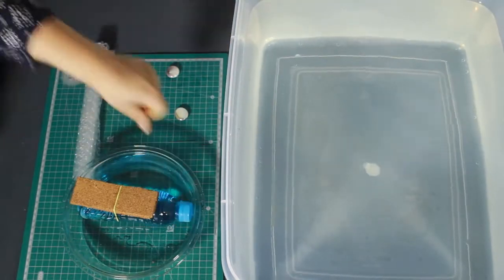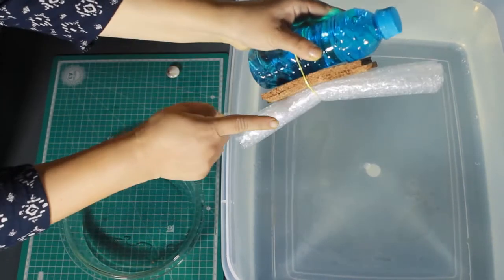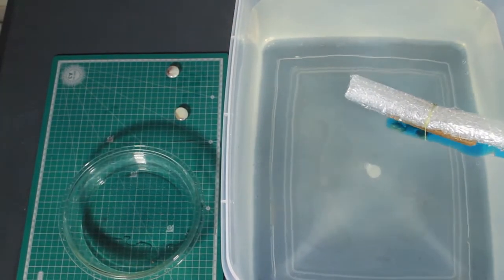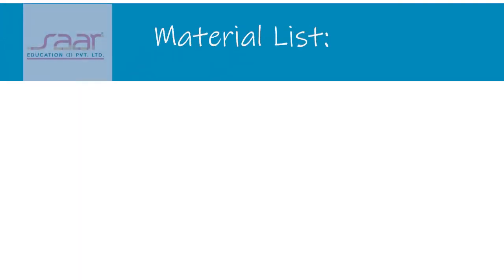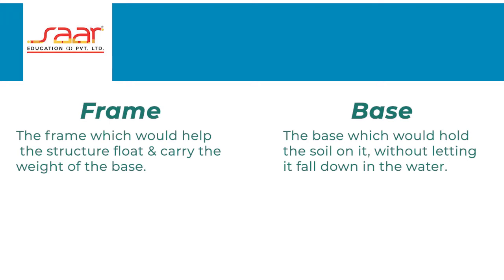Now that we have understood how things float or are buoyant, let's build our structure. Let us identify the two parts of our project: A) the frame which would help the structure float and carry the weight of the base, B) the base which would hold the soil on it without letting it fall down in the water.